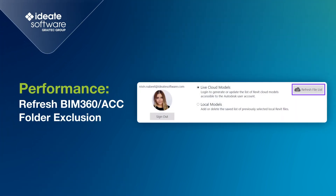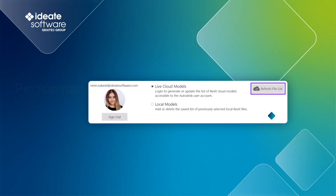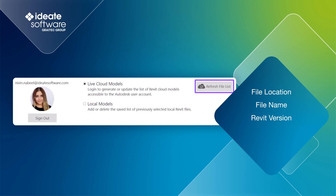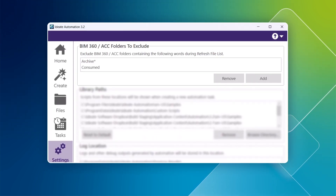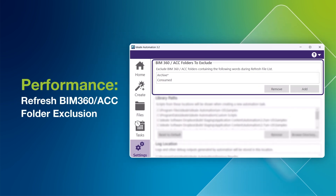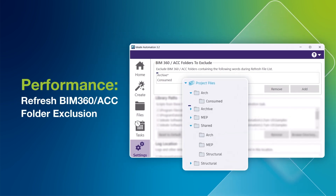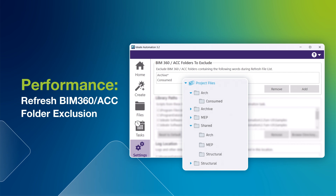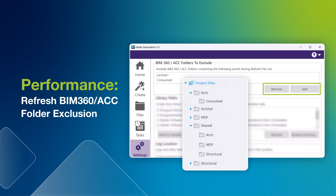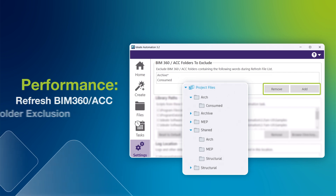The refresh file list is important for cloud models to stay current, especially with updates to critical information such as file location, file name, Revit version, or being added to a new project hub. With the new BIM 360 ACC folder exclusion feature, this refresh process is significantly faster and more efficient. By excluding folders like Archive or Consumed, the process is optimized. Notably, you can use an asterisk as a wildcard indicating all folders beginning with the word Archive. You also have the flexibility to add and remove your own custom folders for exclusions as needed.